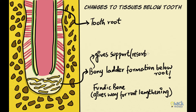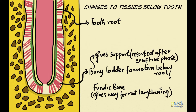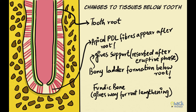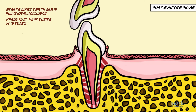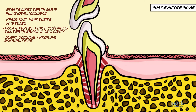After the eruptive phase, the bony ladder is resolved to give way for the rest of the root to form, and finally periodontal ligament fibers are established to the apex between the socket floor and the root tip. The post-eruptive phase starts after the teeth reach functional occlusion and is at its peak during 14 to 18 years of age, though tooth movements continue until teeth remain in the oral cavity. These movements are slight occlusal and proximal movements that help keep the teeth in position despite jaw growth and wearing away of tooth surfaces, both occlusal and proximal.